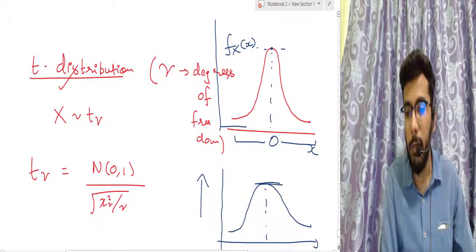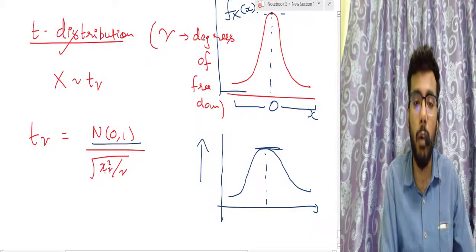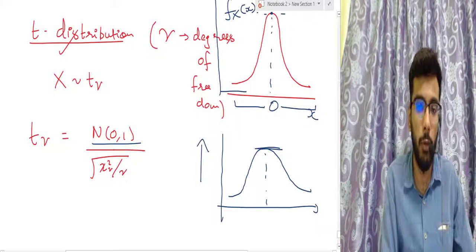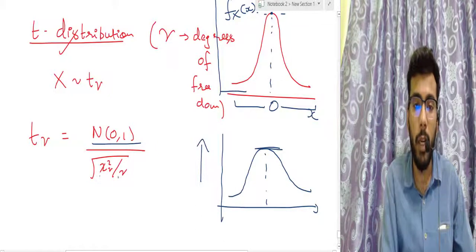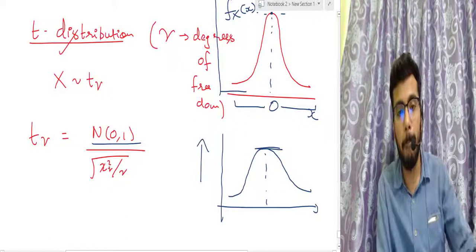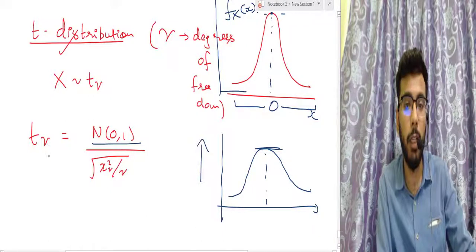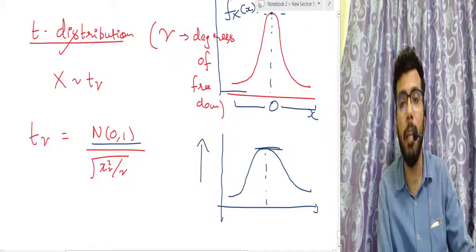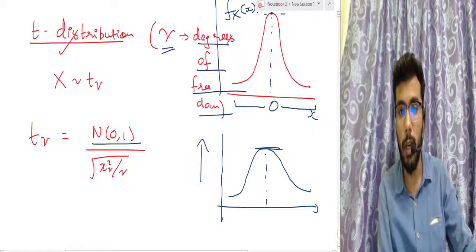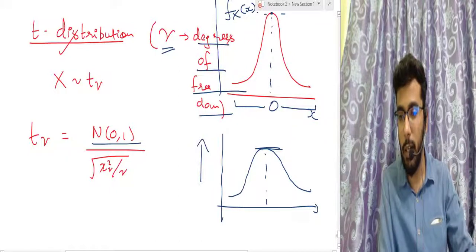The PDF of the T distribution is the standard normal distribution divided by the square root of chi-square(ν) divided by ν. For example, if you take the standard normal and divide by chi-square(8) over 8, you get the T(8) distribution. The only parameter is the degrees of freedom, ν, which we also had for the chi-square distribution.